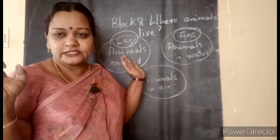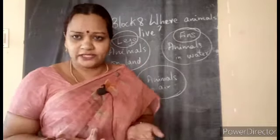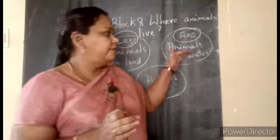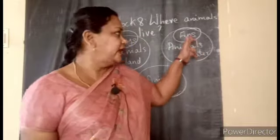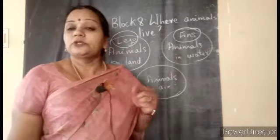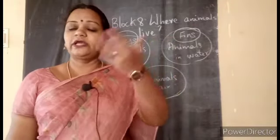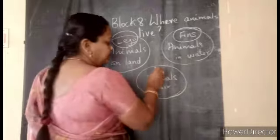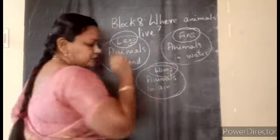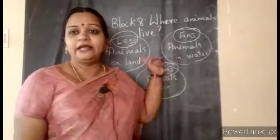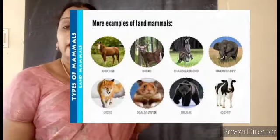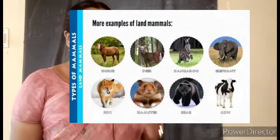If you take snakes, they live on land but they don't have legs. Most animals living on land move by legs. If you talk about fishes in water, they have fins to move — to get their food. And animals in air, most of the time found in the air, like birds — they use their wings to move.